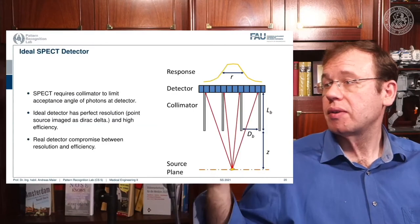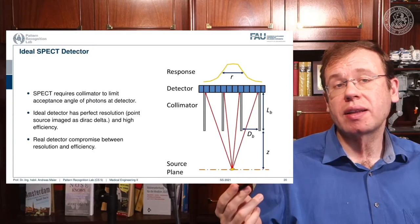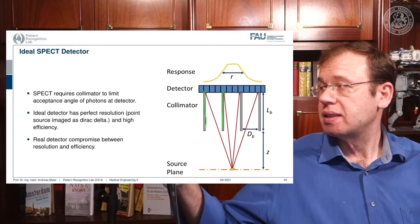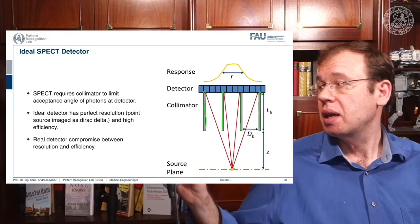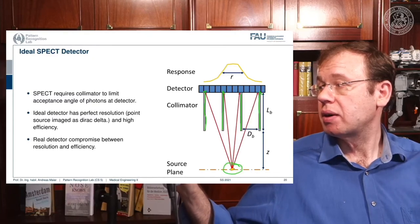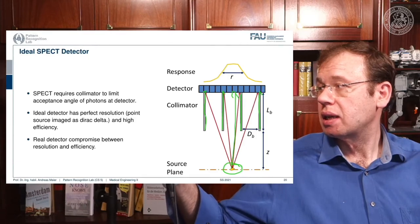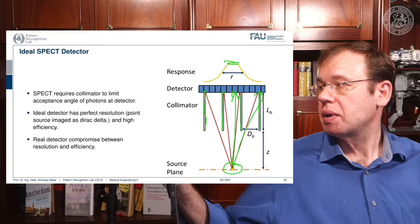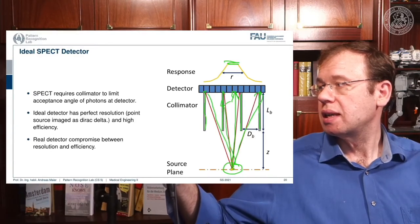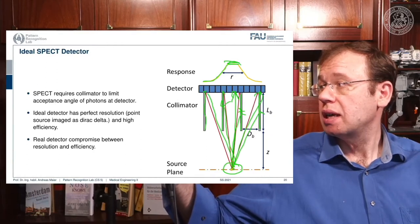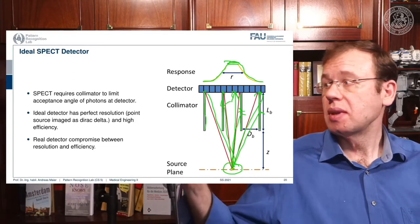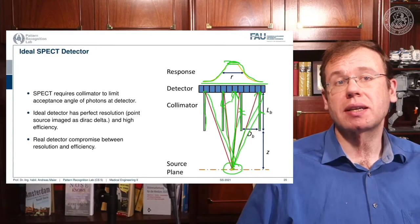A major challenge for SPECT is that we don't know where each gamma quantum originates. We use a collimator, similar in concept to the anti-scatter grid in x-rays. Events from a specific location pass directly through the collimator holes, giving a high response. Radiation arriving from other directions is blocked by the collimator, which absorbs those photons. This results in a sharper point spread function than without a collimator, enabling better image formation — particularly for SPECT.